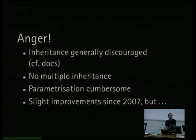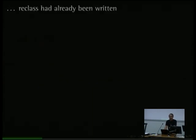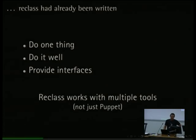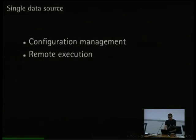There are improvements since 2007 when I started Reclass — the project I'm talking to you about — but by that time Reclass had already been written according to the Unix philosophy. Reclass doesn't only work with Puppet — well, it doesn't work with Puppet at the moment, but it could. It allows you to work with multiple tools at the same time. Salt and Ansible are good examples: one does configuration management and the other does remote execution really well. If you can use both and know you're talking to the same inventory, you can sleep better at night.